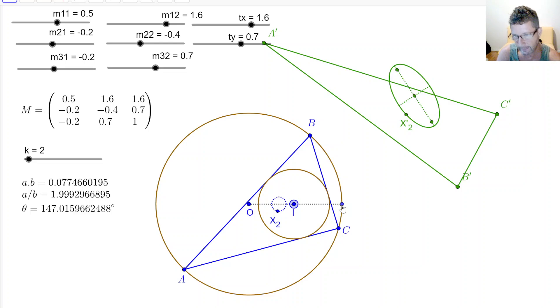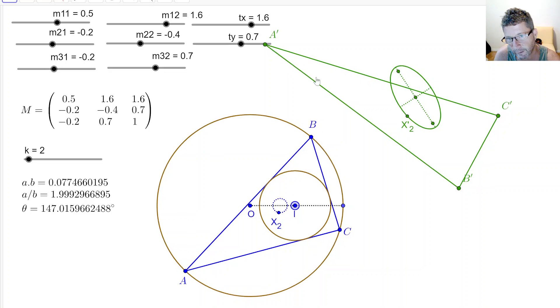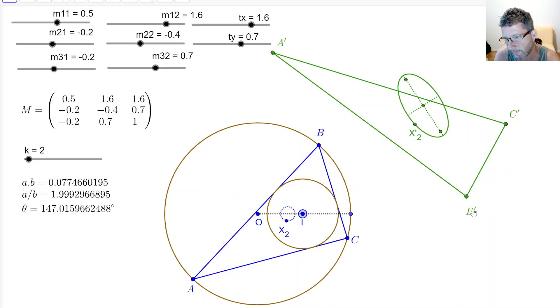And what I'm looking at is the projective image of ABC, which is over here. A prime, B prime, C prime, under some chosen and fixed projectivity matrix, 3x3.